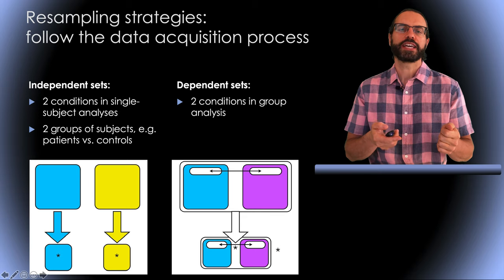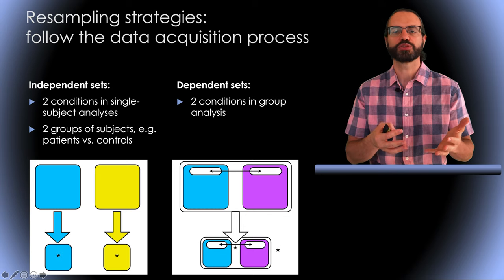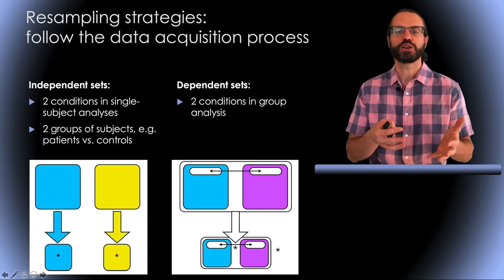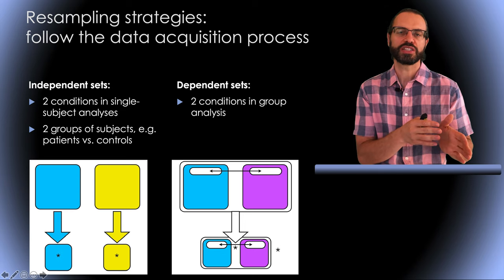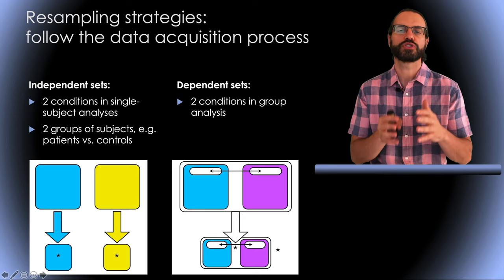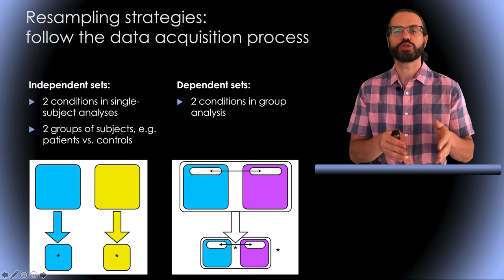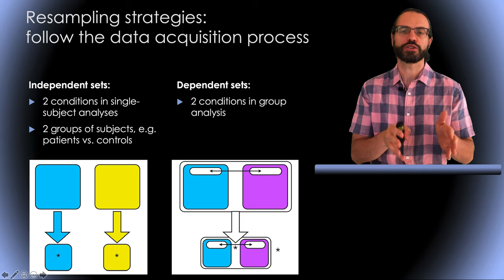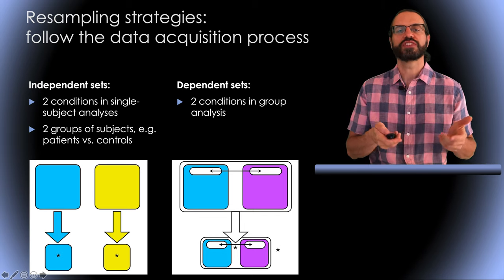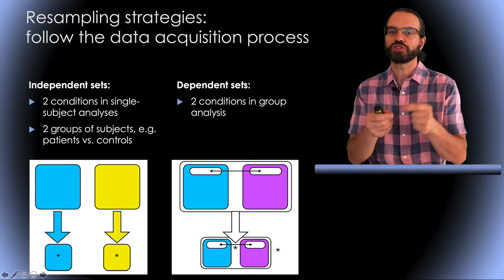Also, by the way, the way you use Bootstrap is different based on the data acquisition process. What we have seen so far was for independent sets, meaning you have two conditions in single-subjects analysis, or when you have two groups of subjects, for example patients versus control. For dependent sets, it is different. This would be for example comparing two conditions across a group of subjects with each subject experiencing the two conditions. In this case, you first compute the difference for each subject individually and you bootstrap the difference value.